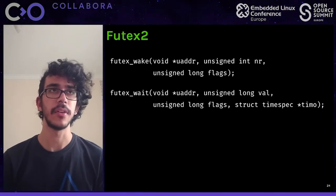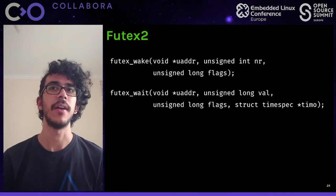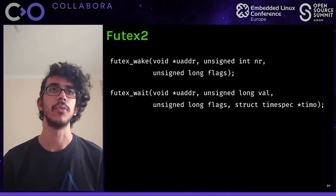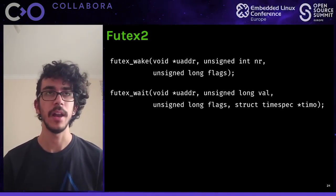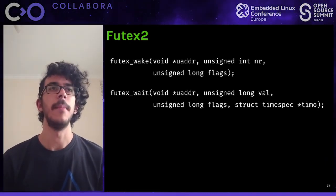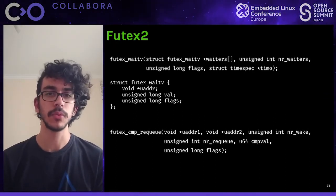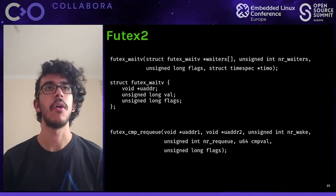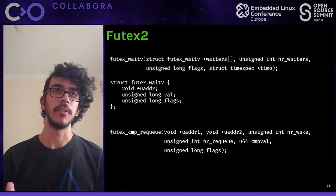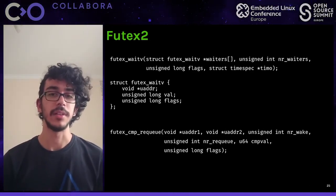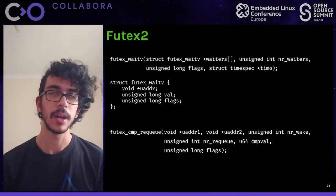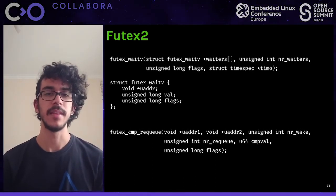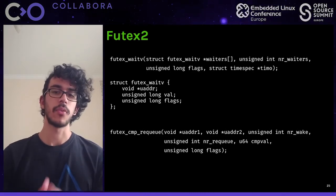Here is the interface for wake and wait. They are similar to what we had before. For wake: the address, the number of wakes to perform, and flags. For wait: the address, the expected value, flags, and timeout. For wait-multiple, it's called waitv because it's a vectorized wait. The first argument is a pointer to an array of waiters, where each waiter has an address, an expected value, and flags — since different entries in the array can have different sizes. You also pass the number of waiters, flags, and timeout. The compare-requeue operation has different semantics around requeuing waiters from one address to another.